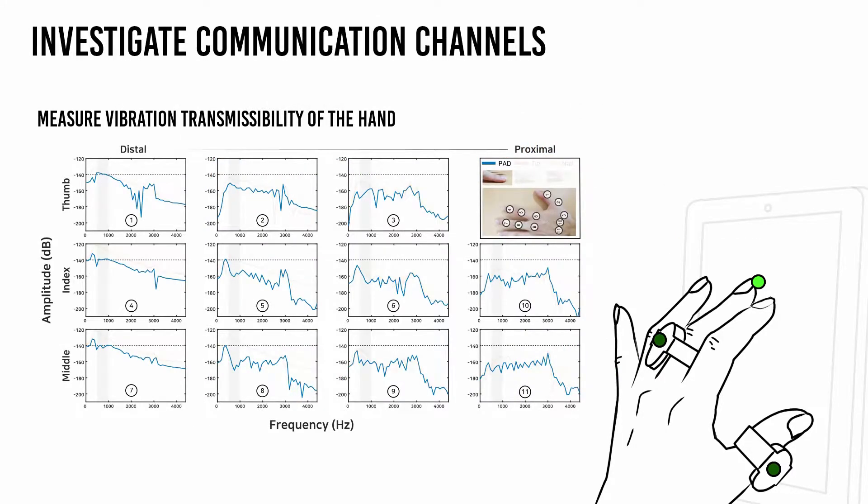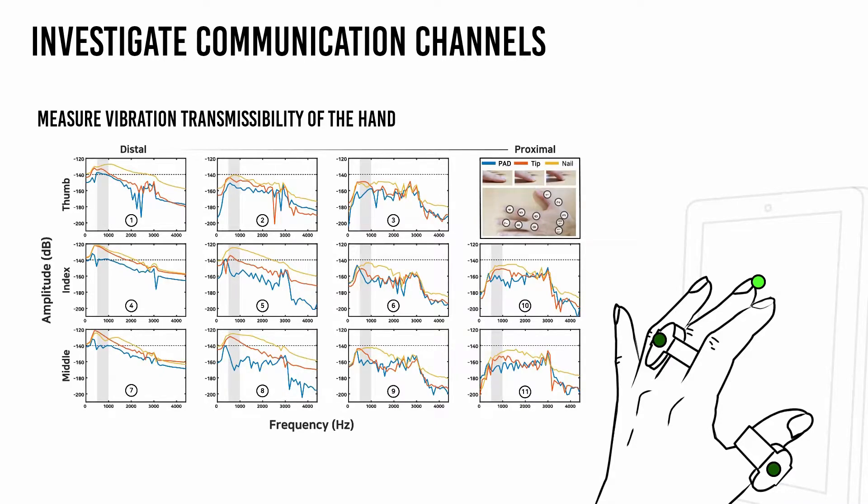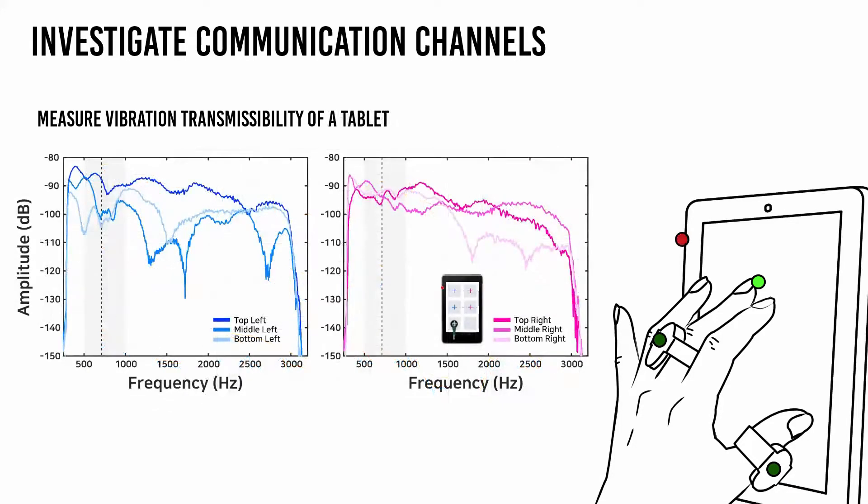For successful vibratory communication, a vibration needs to travel through a series of channels. Therefore, we investigated the vibration characteristics of the channels involved: the hand and the surface of a tablet.